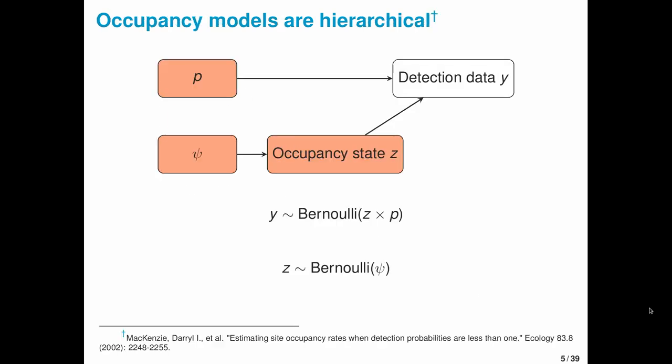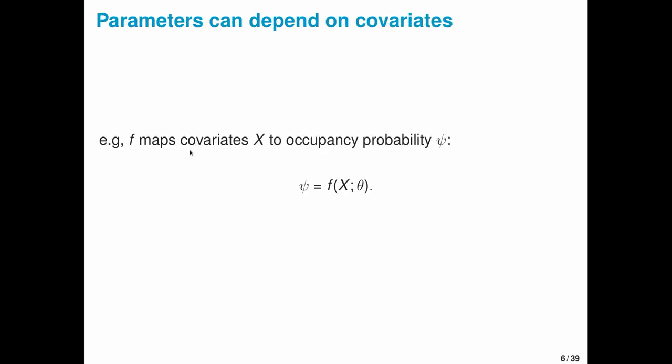Occupancy models are a fairly simple example of a hierarchical model. Here the states are occupied or not. The data are detection non-detection data that are imperfect, so for example we might have false absences in this data set where a site is occupied but we fail to detect that species. The parameters are p, the probability of detection, and psi, the probability that a site is actually occupied.